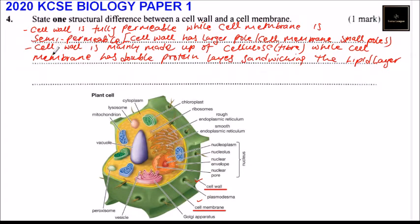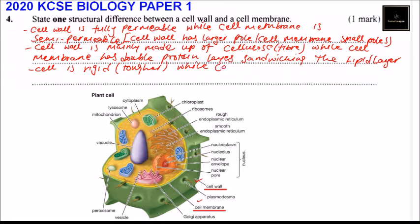Another difference is that the cell wall is rigid — you can tell it is tougher. While the cell membrane is weak and is more flexible.